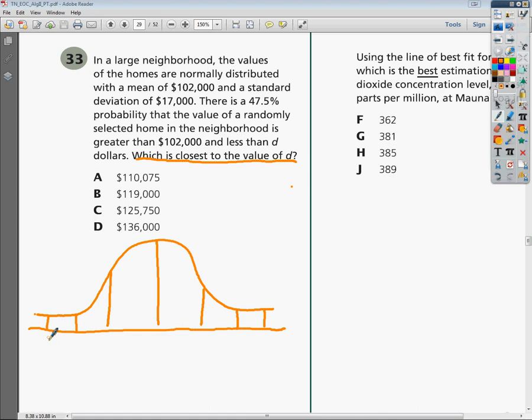Pretty much, it says that the mean here is $102,000. So what this means is that this number right here in the middle, your average, that's supposed to be your $102,000.